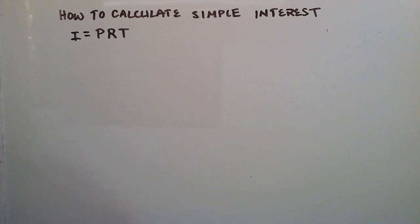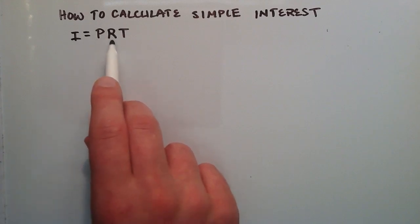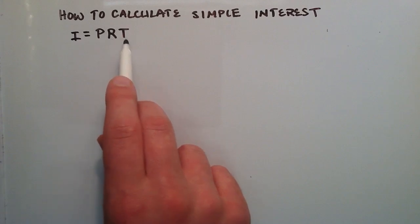The simple interest formula is pretty simple. The interest is equal to the principal, which is the amount of money we start with, multiplied by the rate of return, multiplied by the time that our money has been invested.